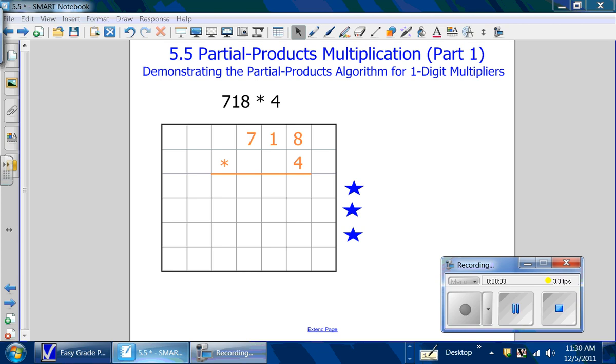We're going to solve a problem using partial products multiplication. In this method, multiplication is usually done from left to right. This ensures that the most important products, the largest ones, are calculated first.